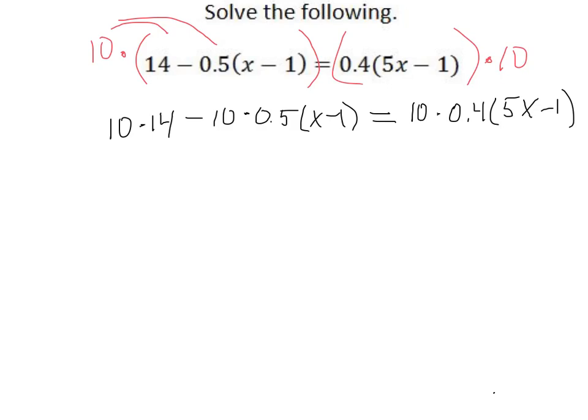10 times 0.4 times 5x minus 1. So we end up, notice, 1, 2, 3. We multiply by 10 three times on this problem because we had 1, 2, 3 terms in our equation. So when you multiply to clear fractions, make sure that you end up multiplying every term by that number, the lowest common denominator.